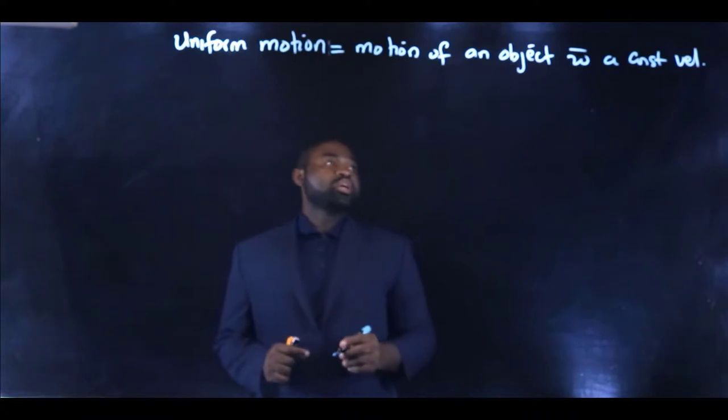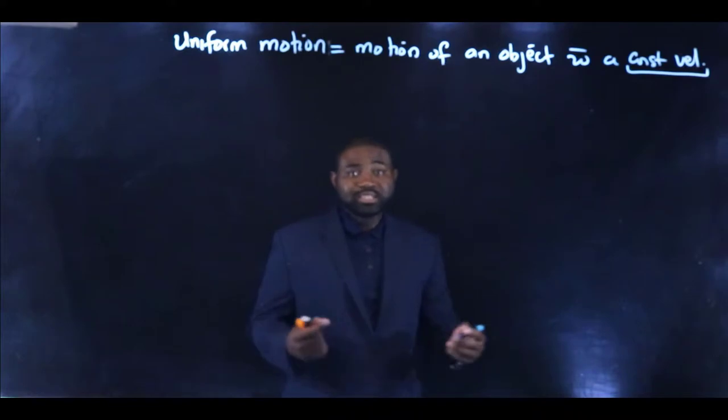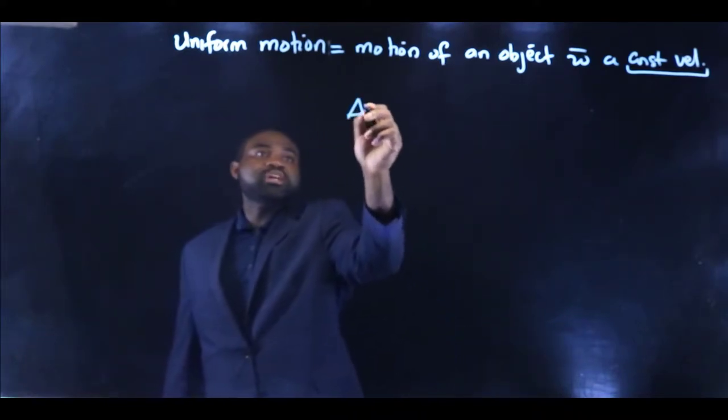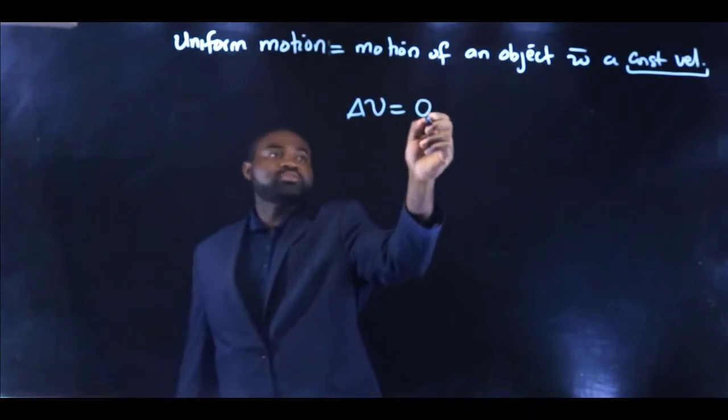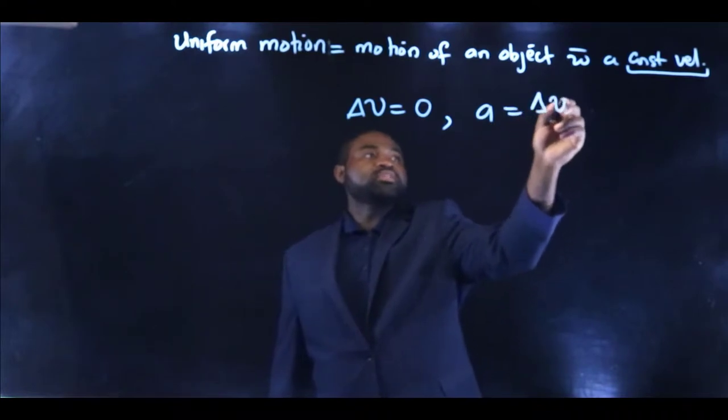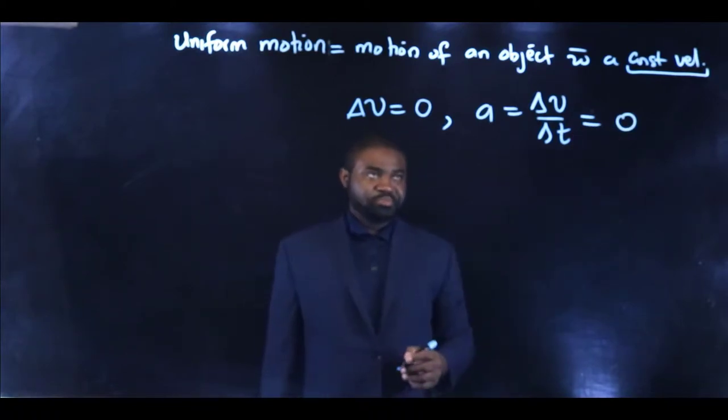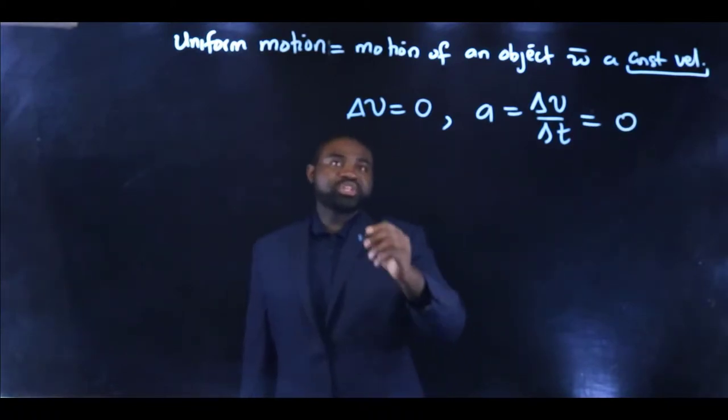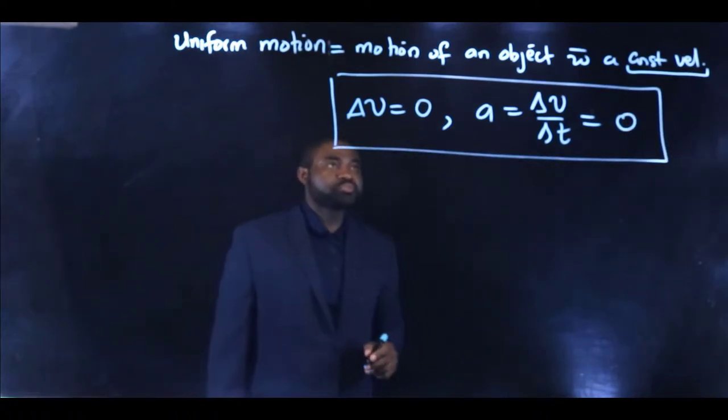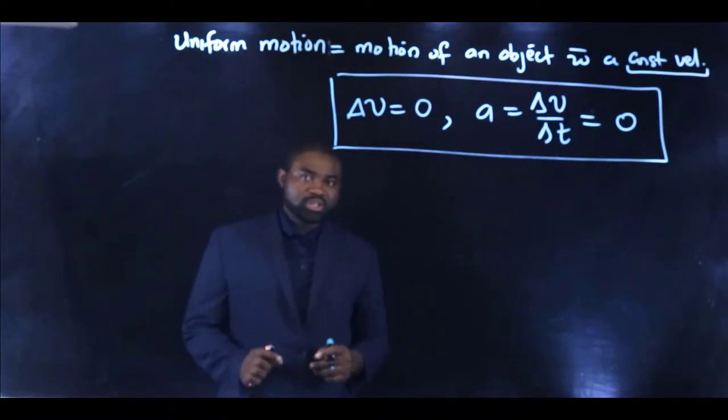Now, if the velocity is constant, what does that mean? It means it doesn't change. In other words, ΔV is zero. And because a is ΔV over Δt, that means that a is zero. This is an interesting statement. I'm going to expand that pretty soon. So uniform motion is a zero acceleration motion.